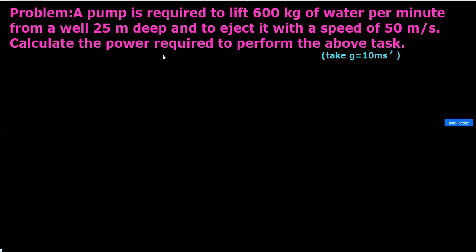The depth of the well is 25 meters from which we have to take water up, and the speed with which water comes out of the pipe is 50 m/s. Okay, so let's write first the given things.